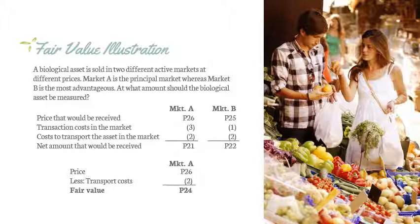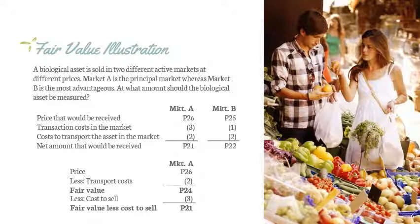As biological assets are measured at fair value less cost to sell, we also need to deduct the transaction cost from the fair value. Hence, our biological asset is measured at 21 pesos.